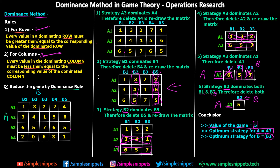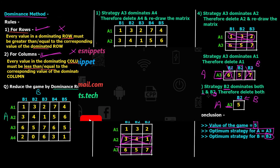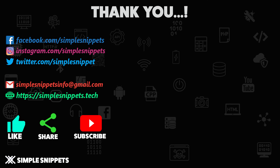In this specific numerical we could use dominance method completely to reach the final answer, but in most cases dominance method is used only to reduce the matrix to a certain level, after which none of the conditions apply and we have to use some other method. This example was chosen specifically to demonstrate the full use case of dominance method. In the next video we'll see some other method used to solve game theory — if you liked this video please give it a thumbs up, share it with your friends, and thanks for watching!